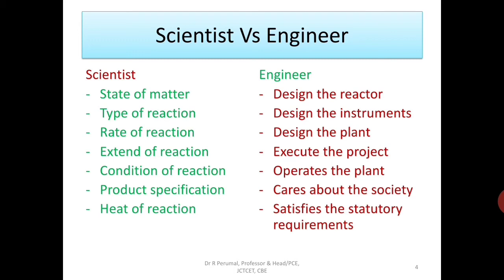The scientist determines the extent of reaction — to what extent the reaction will occur, how to shorten or prolong it. The scientist decides the condition of reaction — the operating temperature, operating pressure, and concentration level of the reactant and product. The scientist specifies product specification — how much will be the purity and yield of the product — and the heat of reaction — whether the reaction evolves heat or absorbs heat. So the scientist will give you the recipe.